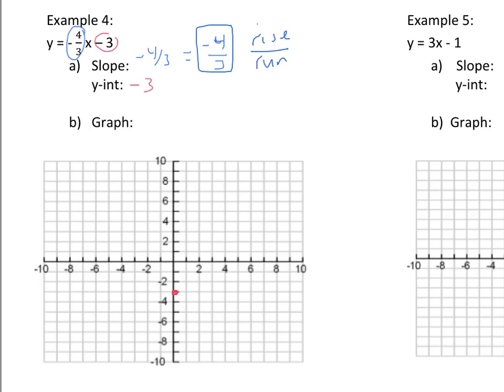So from the y-intercept I go down 4: 1, 2, 3, 4. And I now have a positive 3 in the run part, so I will go to the right 3. And that is our next point. So we graphed our y-intercept, then we used the slope to find our next point from the y-intercept. And that is our line.